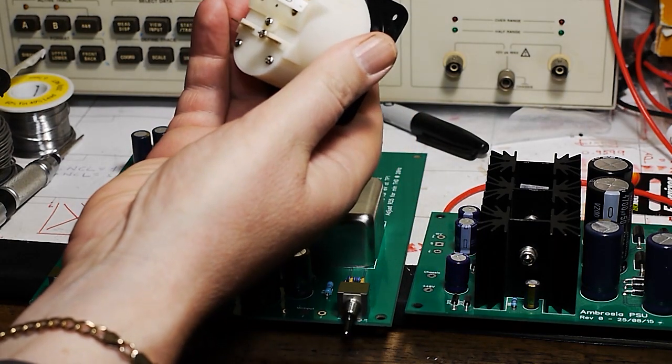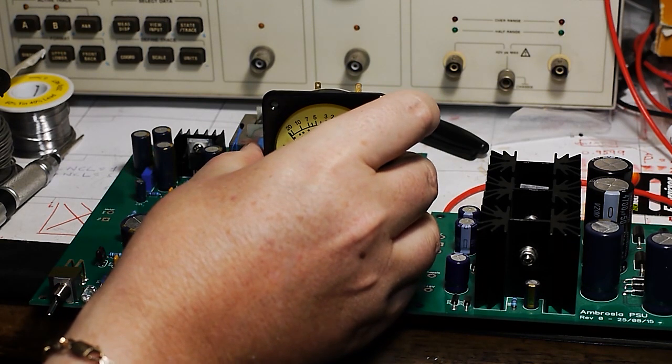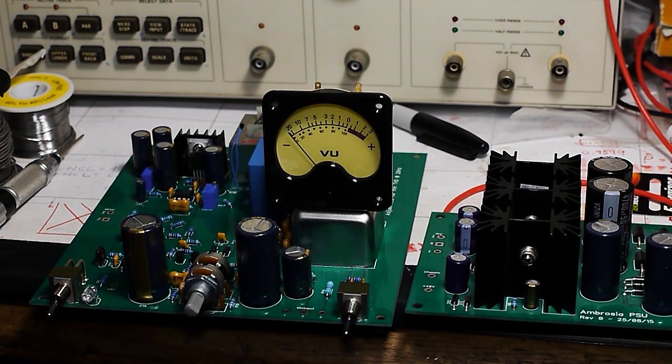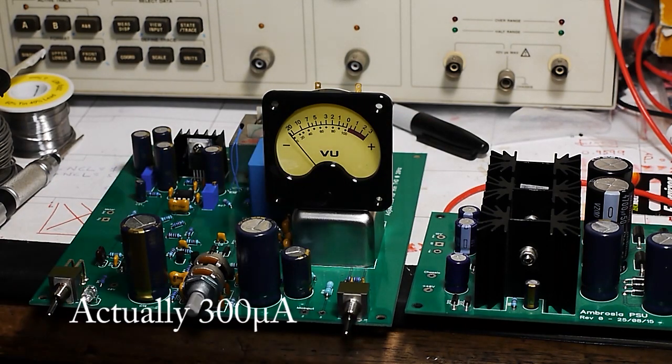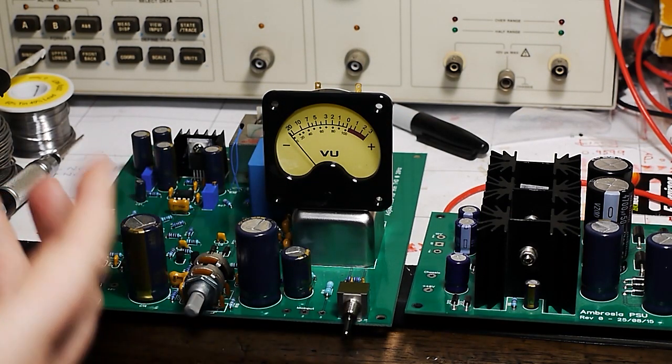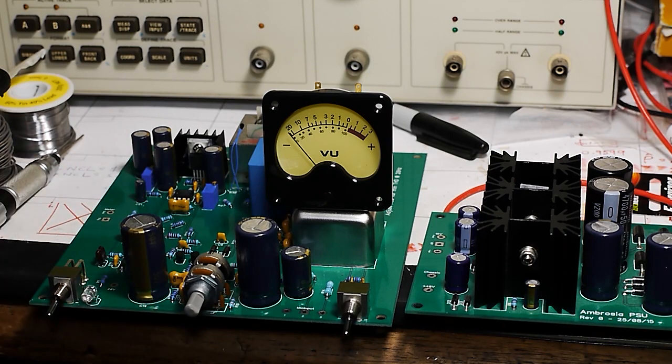So this is basically a DC ammeter of around about 50 microamps for full scale deflection. So you're going to need to rectify the AC signal in order to drive it.